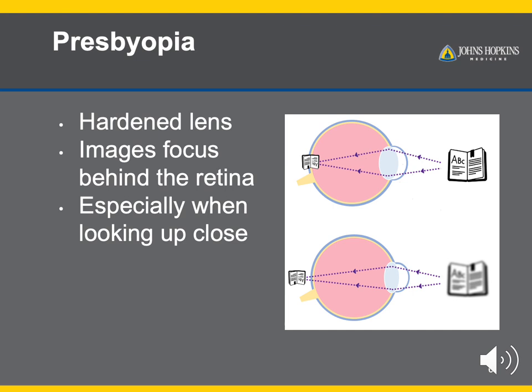Presbyopia happens when our lens loses that squeezing power as it hardens with age. This is especially problematic when looking up close or reading, as our lens usually works extra hard to converge the light and focus it on the retina. Because the elasticity of the lens decreases with age, this is more common in older adults and, similar to hyperopia, results in an image focused behind the retina.